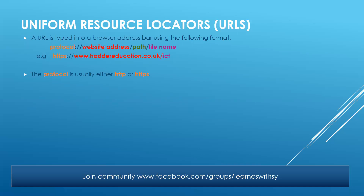Let's look at each URL component separately. First is the protocol: HTTP or HTTPS. Second is the website address, which breaks down into: the domain host (www, or World Wide Web, which we studied in topic 5.1); the domain name or website name; and the domain type — for example, .com for commercial, .org for organizations, .net for networks, .gov for government, and .edu for education.